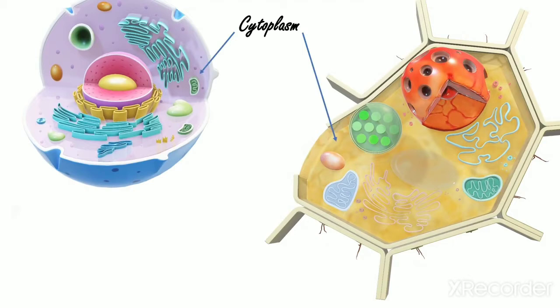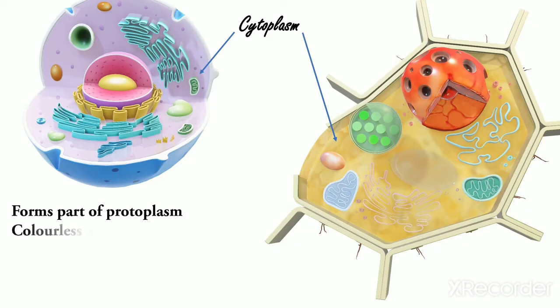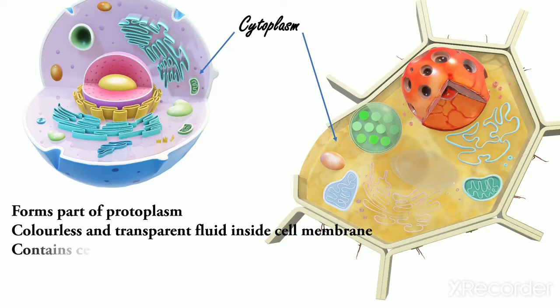Cytoplasm. It is the part of the protoplasm present between the plasma membrane and nucleus. It is a colorless and transparent fluid inside the cell membrane. Cytoplasm contains many tiny structures called cell organelles.